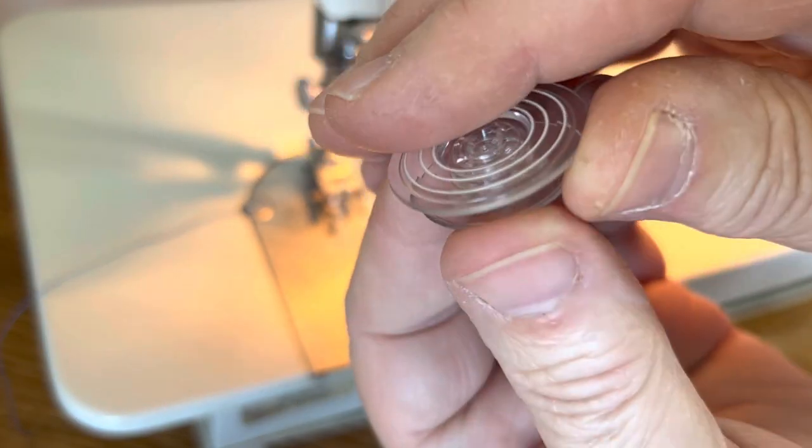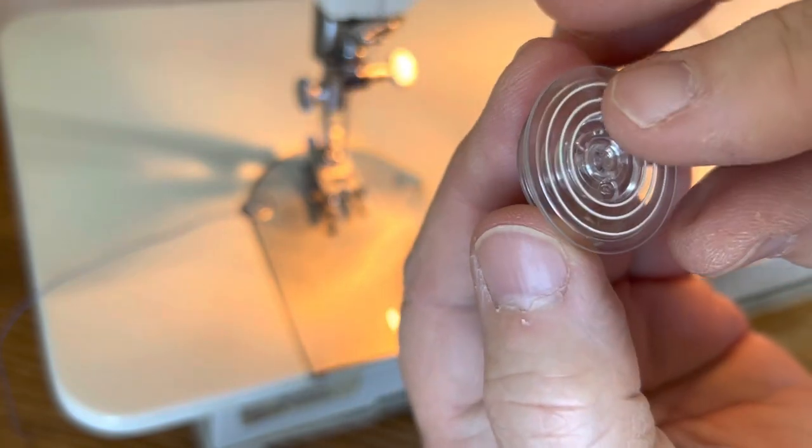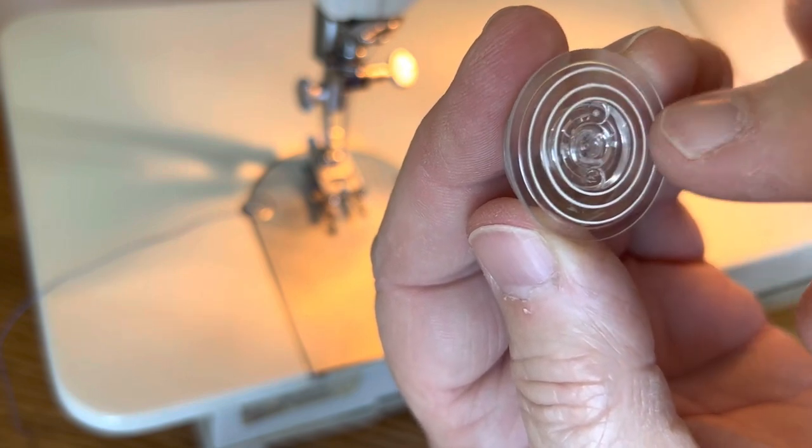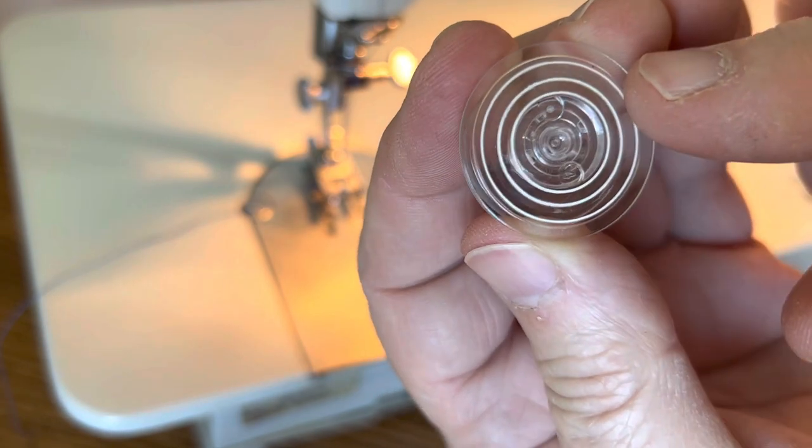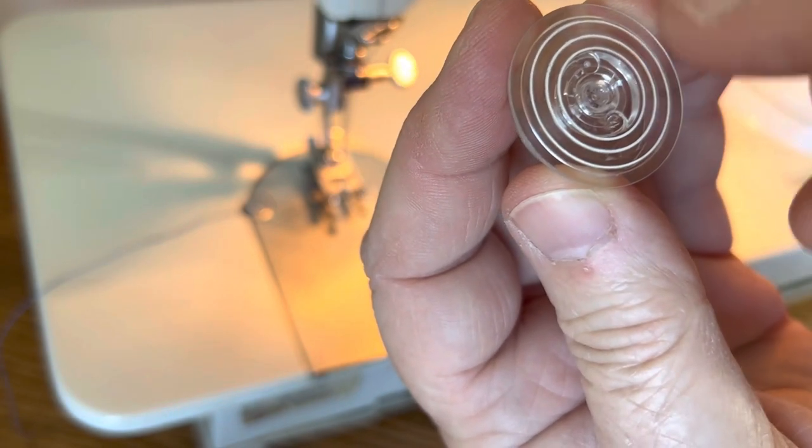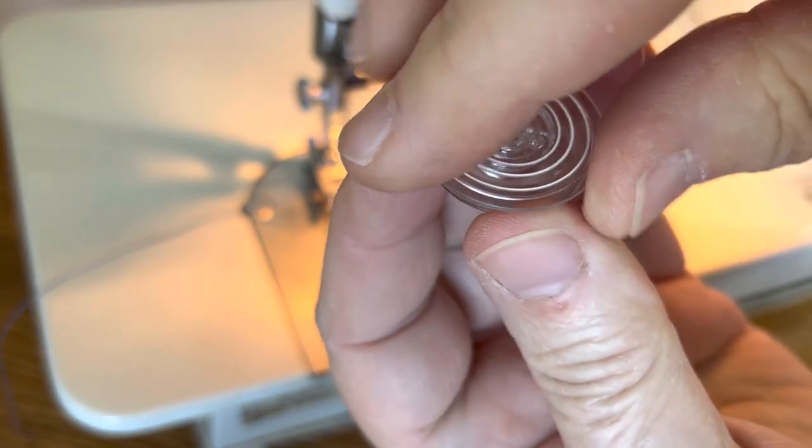This is your Touch and Sew bobbin. It's bigger on the top and smaller on the bottom. These rings, if you look in your manual, will tell you how many yards of thread is on them. I believe it is maybe two yards for one of the first rings, and you're not supposed to go past this ring right here. I believe that's ten yards.